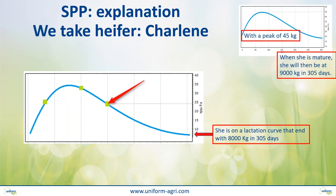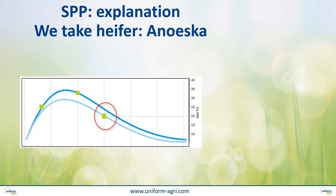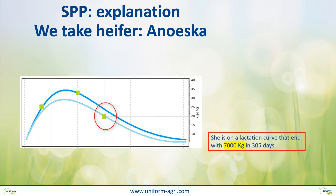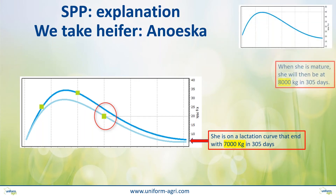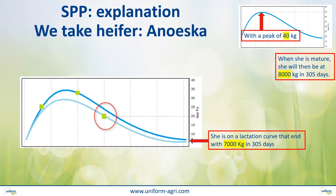What I want to point out is what happens when something goes wrong. She's got milk fever, mastitis, or anything like bad nutrition or an employee mistake. She dropped in milk right here, which affects the whole lactation curve. The prediction at maturity would also change accordingly. So she's now at 7,000 kilos of milk at 305 days instead of 8,000. When she's mature, instead of peaking at 45 kilos, she would now peak at 40 kilos.